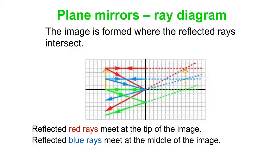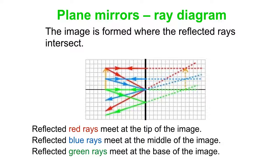What about the blue ones? Well, the blue ones are going from the middle of the object. And so where the reflected blue ones meet, and you have to extend them back to the other side of the mirror to get them to meet, is where the middle of the image is. And the green ones are coming off the base of the object. And so the reflected green rays meet at the base of the image. So often we just draw the ones from the tip of the object. But it's nice to see that, in fact, you can draw them from any point on the object.